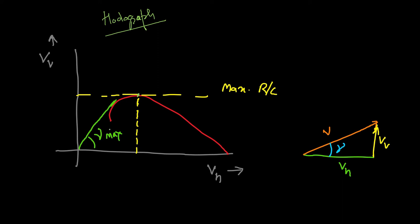A tangent drawn from the origin to the hodograph curve gives the maximum angle of climb, gamma-max. It is important to note that the maximum angle of climb occurs at a different velocity than the maximum rate of climb. The length of the tangent from the origin gives the free-stream velocity V, whose vertical component is the rate of climb V-vertical and whose horizontal component is V-horizontal. These are the key features of the hodograph, which is a very important curve.